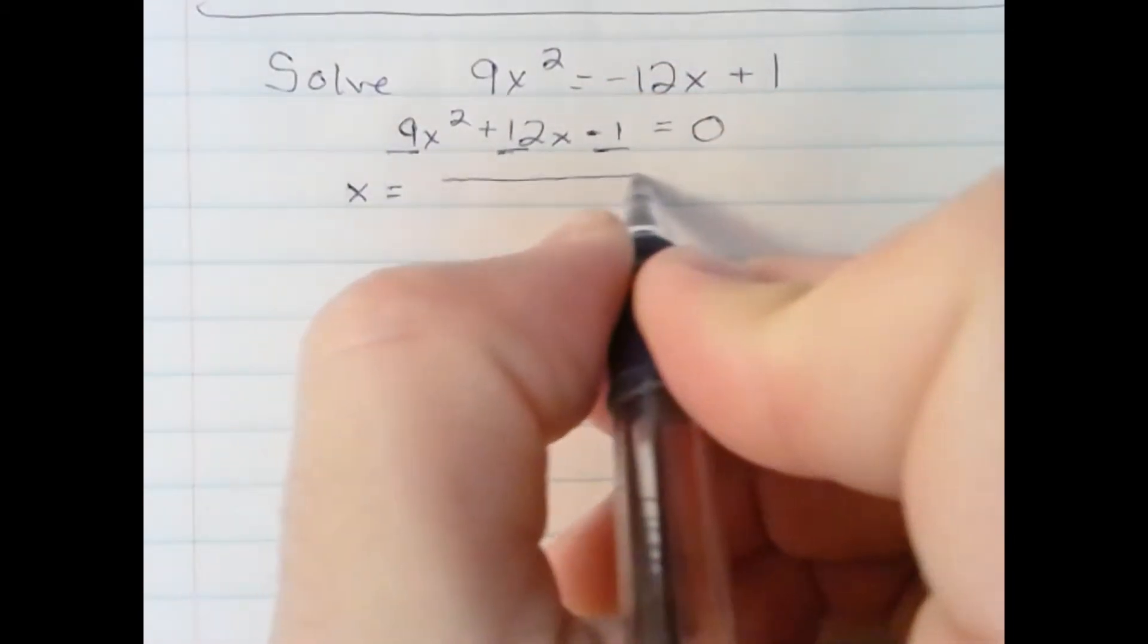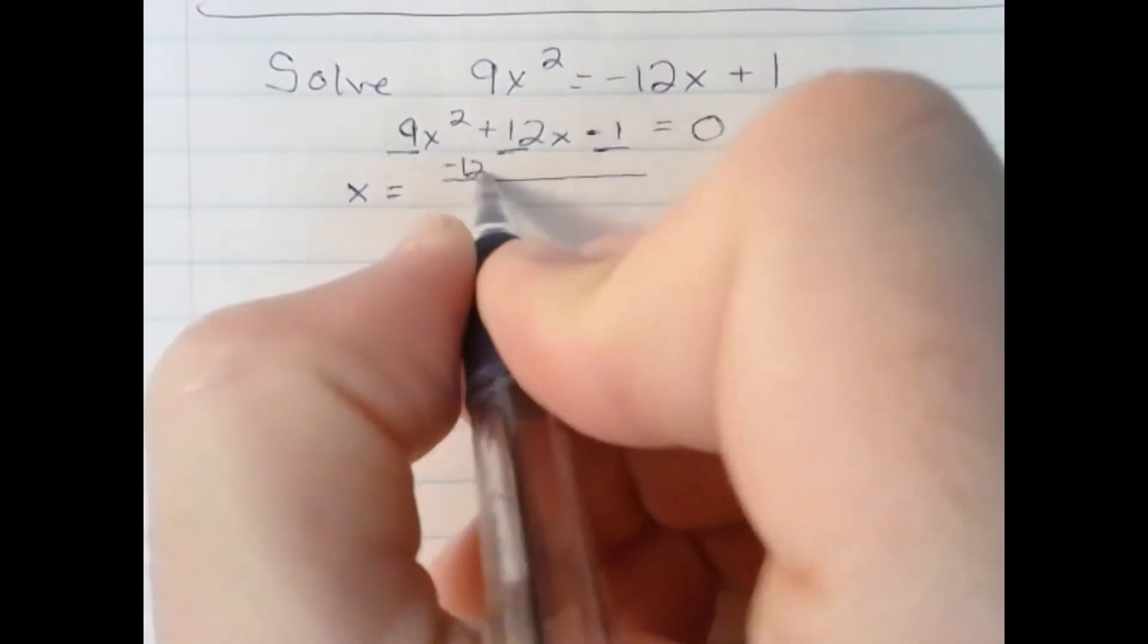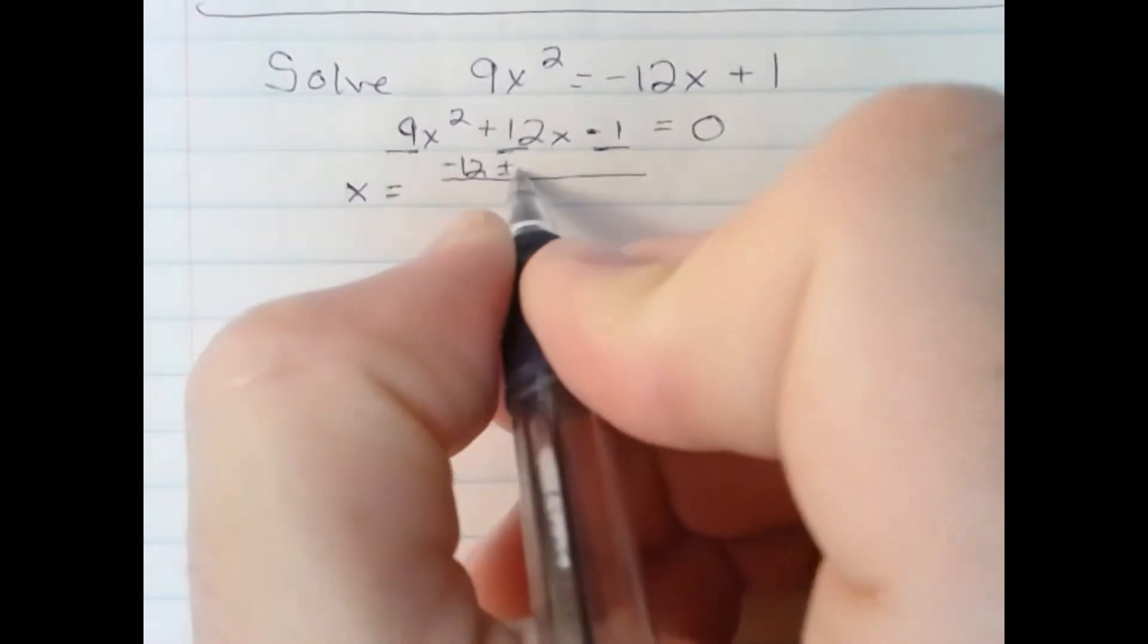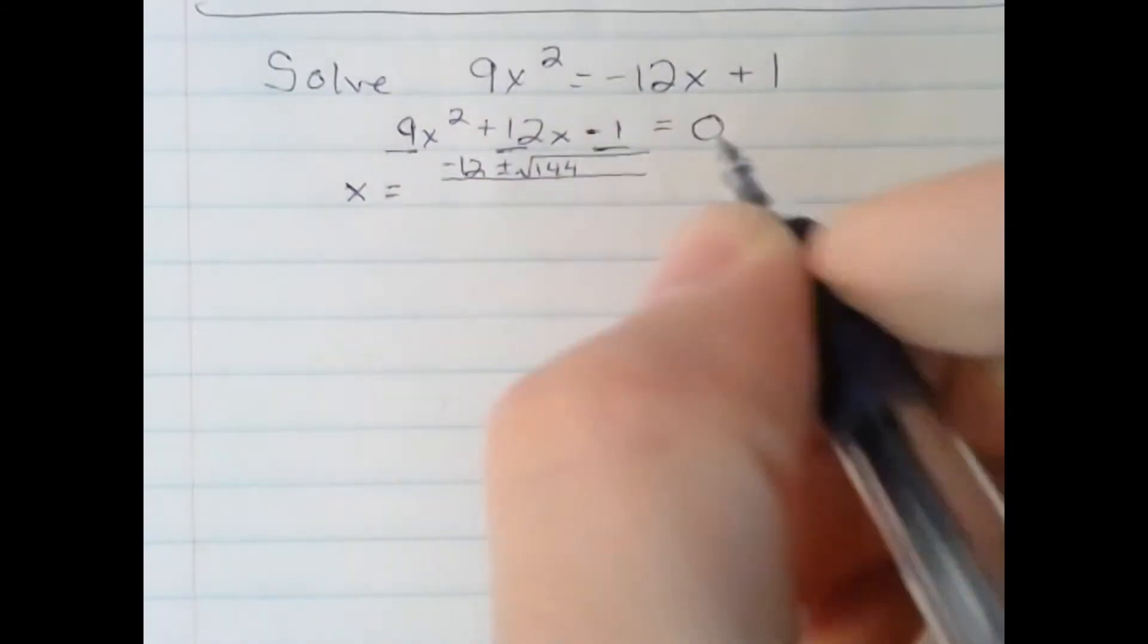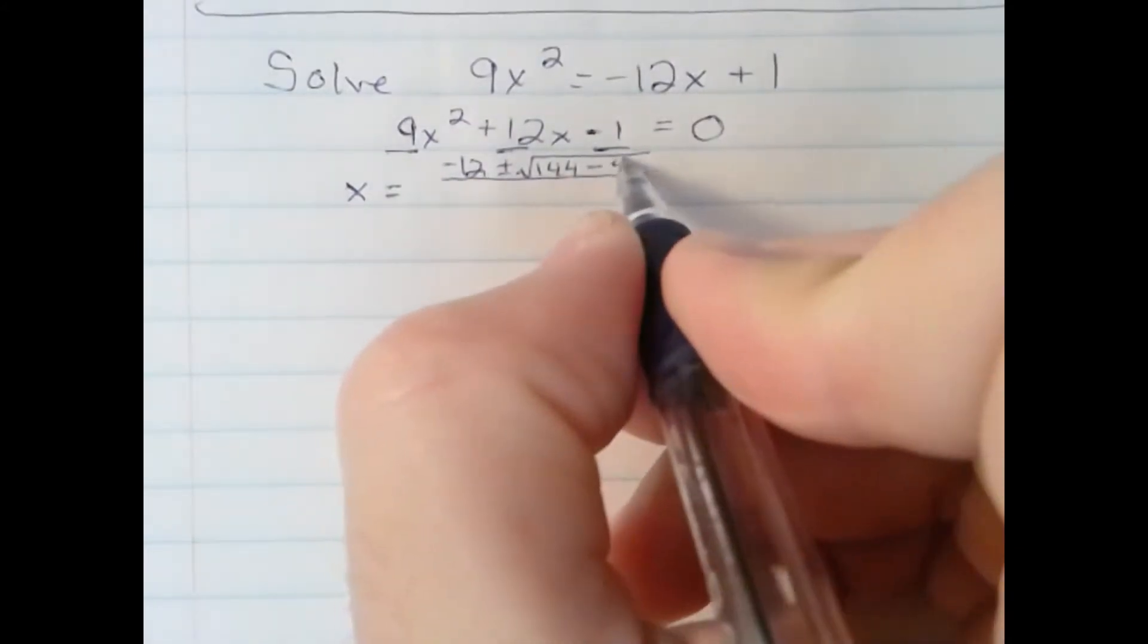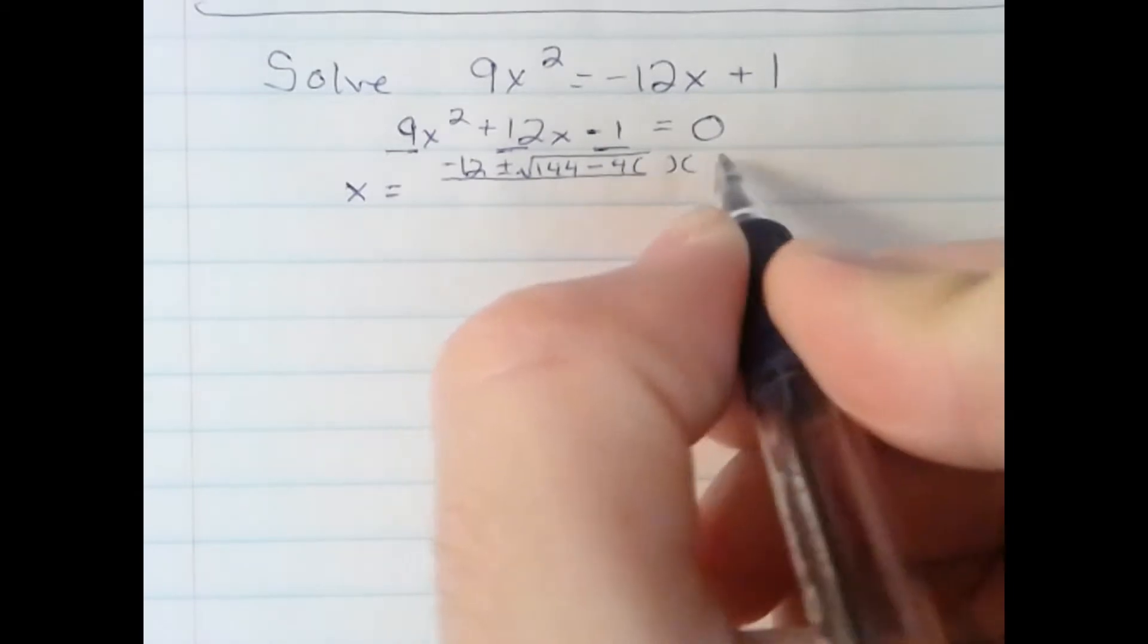x equals negative b plus or minus square root b squared, 12 squared is 144, minus 4 times a times c.